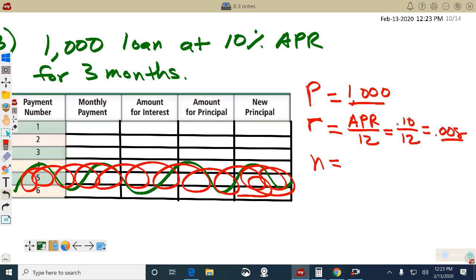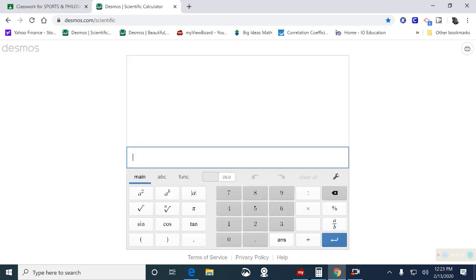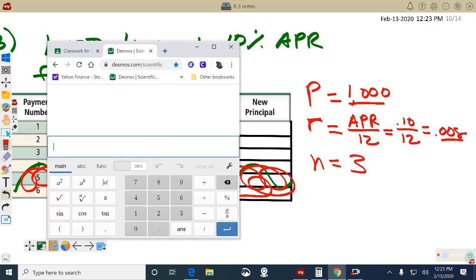Okay, we got our P, we got our R, we just need our N. How many months is it going to take to pay it off? We're done. Let me type this in the calculator and we'll get our monthly payment. Let's do it. I'll get the scientific calculator on Desmos.